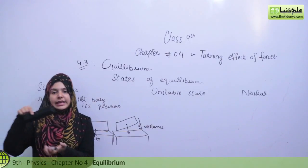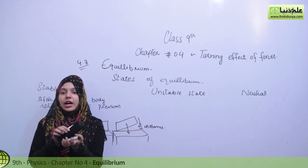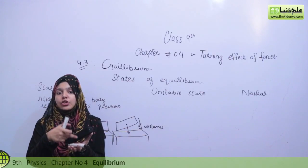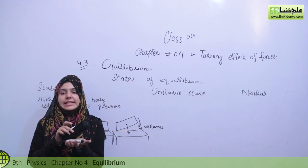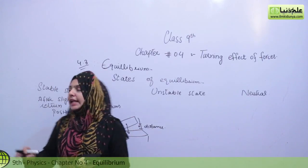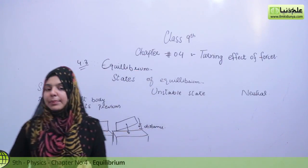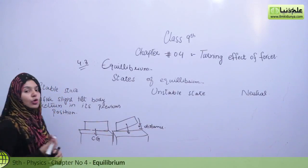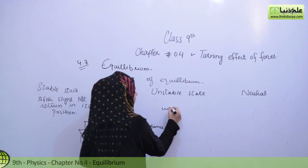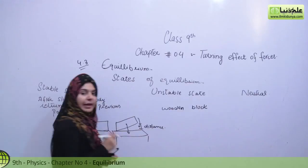For example, if a duster is on a flat surface, it is stable. It was slightly tilted and the center of gravity is slightly raised because the height increased a little. But as we leave it, it returns to the previous position — that is stable equilibrium. Similarly, we take a wooden block, which has two conditions.